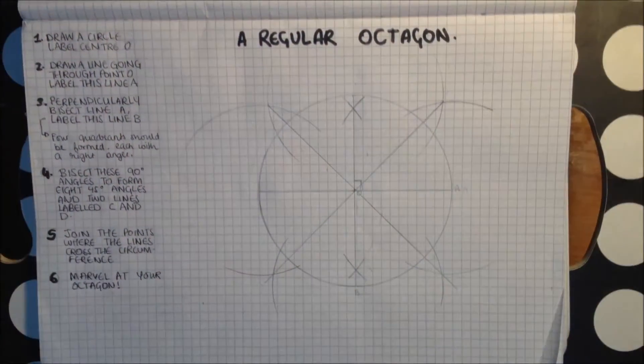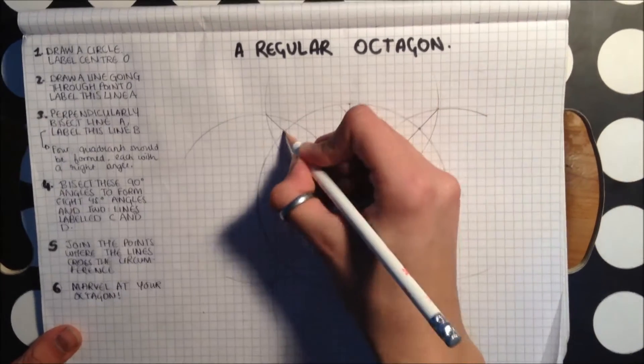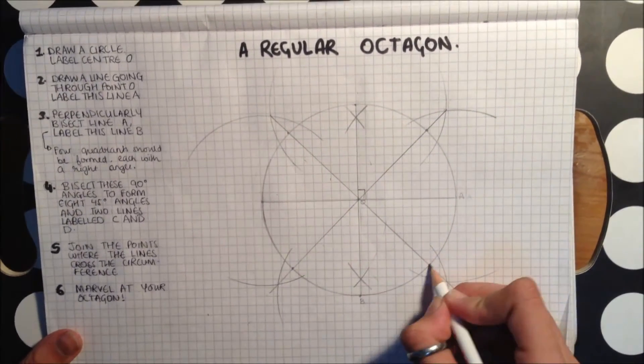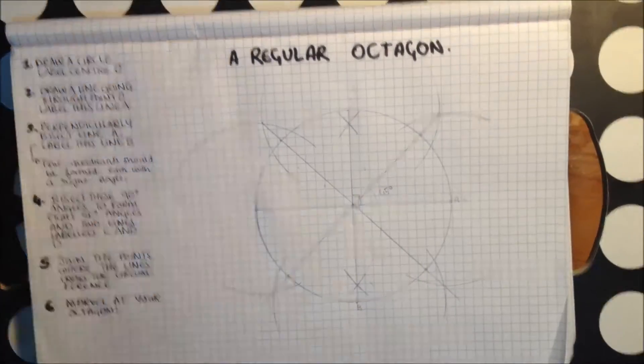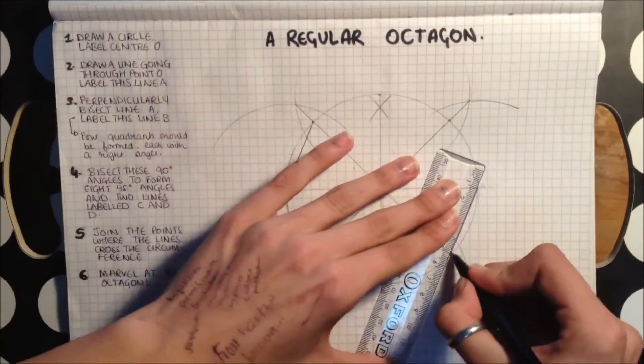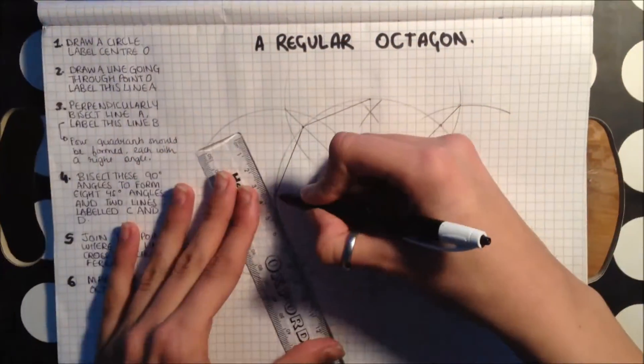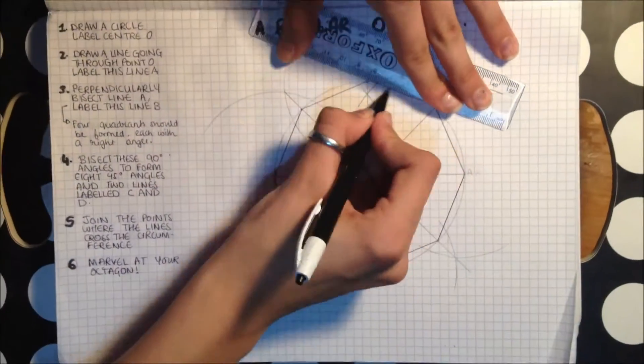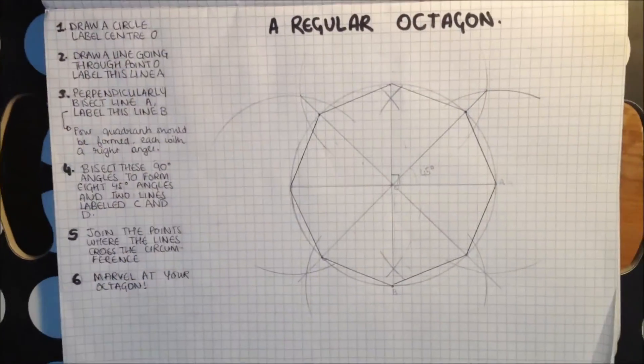you will see that the points at the circumference of the circle will make the vertices of the octagon you are constructing. And by joining up the dots on the circumference, you will have an octagon with the same length sides and same angles.